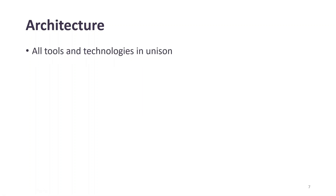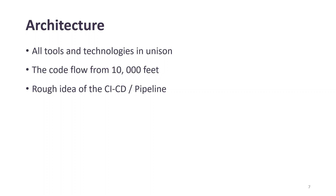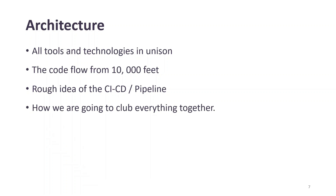The first thing we're going to discuss today is all tools and technologies in unison — meaning whatever tools and technologies we are going to use, we are going to draw a diagram for that by hand so that you can learn by doing. Second, we are going to see the code flow from 10,000 feet — how it would look when the project is completed. Third, we'll get a rough idea of the CI/CD pipeline, and fourth, how we are going to club everything together to make this project working.